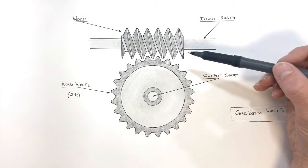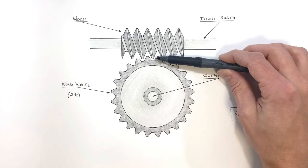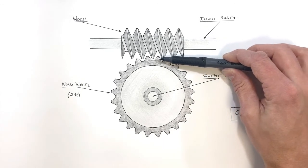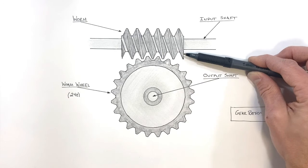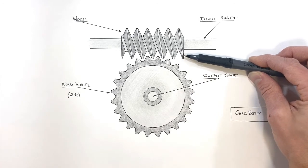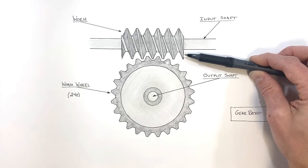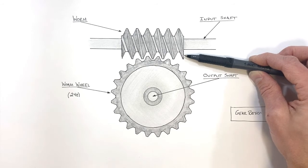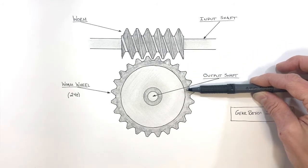The other nice thing about a worm gear assembly is because we have just a little bit of sliding material against each other, this is actually an extremely efficient gear setup. So with very little energy loss, we can have huge multipliers in torque.